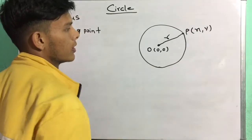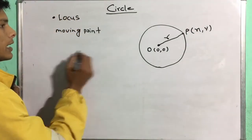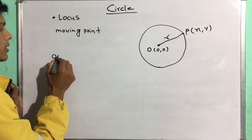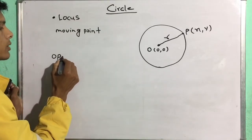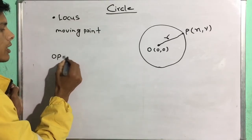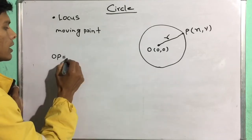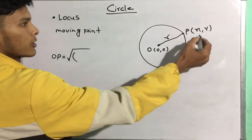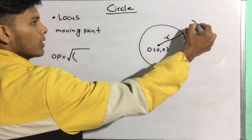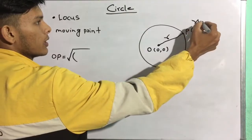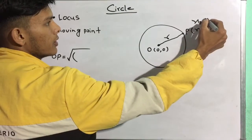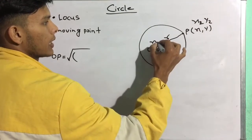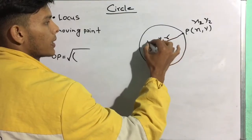This is the distance formula. So we have the distance of OP. This is the root of (x2 - x1)² + (y2 - y1)².